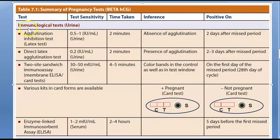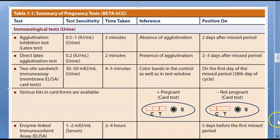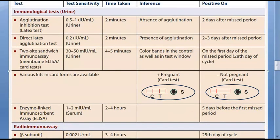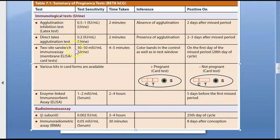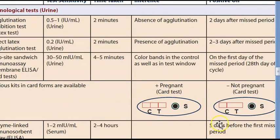For beta HCG testing, you can use immunological tests such as agglutination inhibition test, direct latex agglutination test, sandwich ELISA, and plain ELISA. There is also radio immunoassay, which works with the beta subunit. The card test you get commercially is an immunoassay without a radioisotope — it detects the beta HCG antigen using a commercially available antibody. Two lines means positive; one line means negative.